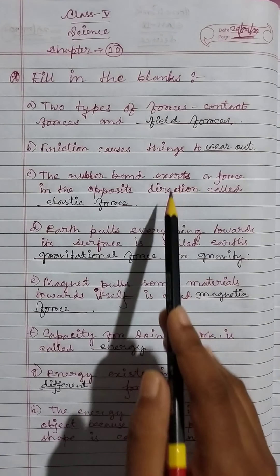The sources of energy that are naturally replenished are called renewable energy resources. A lever has three important parts: fulcrum, load, and effort.